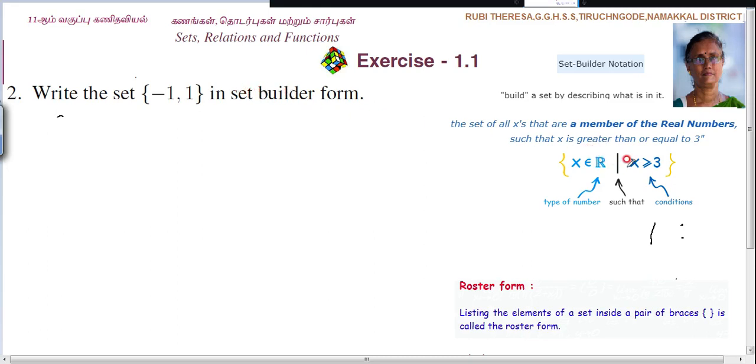Already I told you what is meant by set builder form. That is build a set by describing what is in it. So with the help of x, that is you have to mention a type of number and the condition.